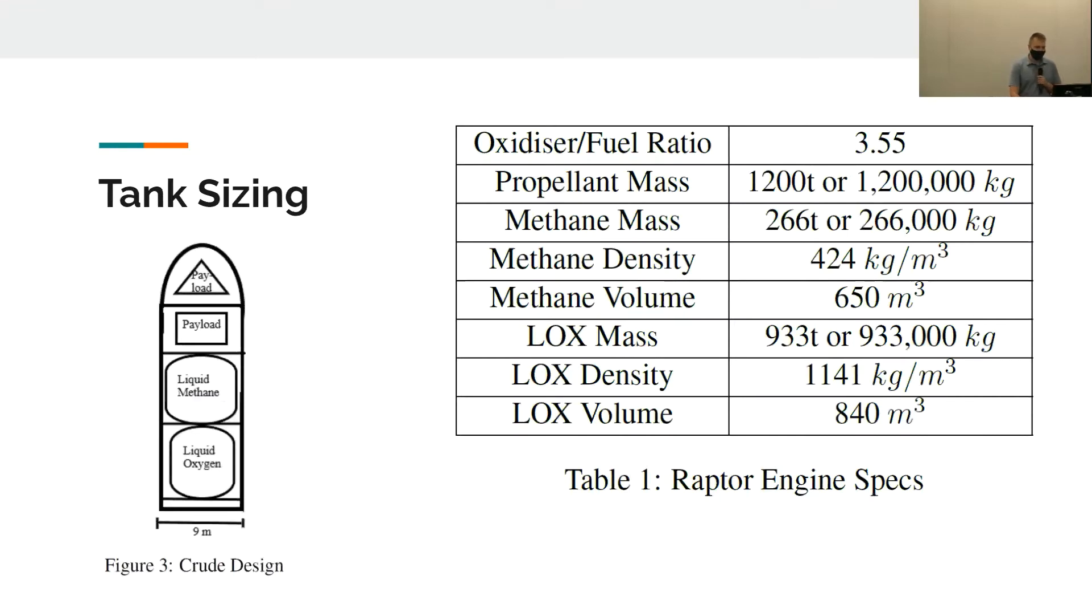We're also going to utilize SpaceX's Raptor engines, which has an oxidizer to fuel ratio of 3.55. From that we can derive the propellant masses of the liquid methane having 266 metric tons and the liquid oxygen having a mass of 933 metric tons.